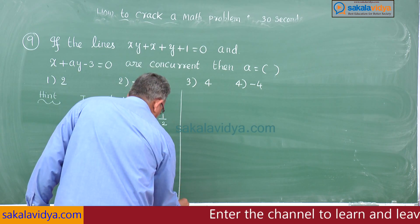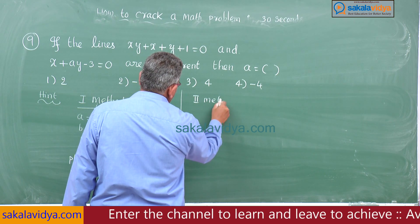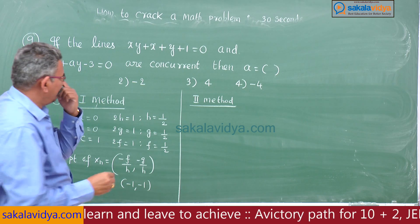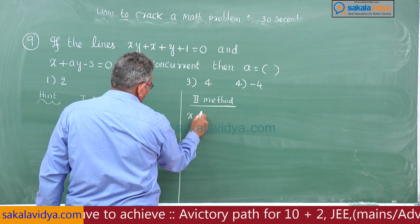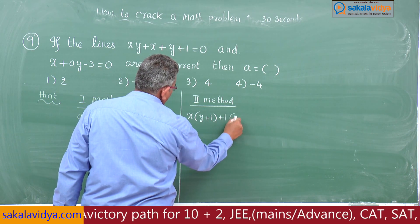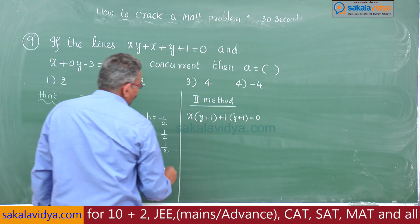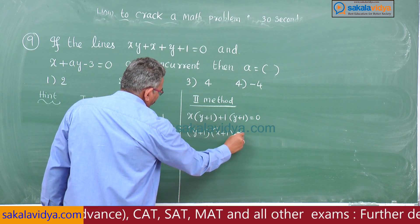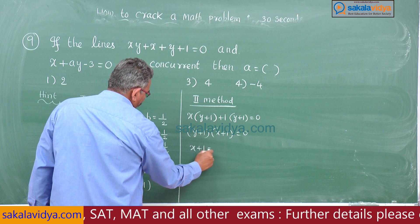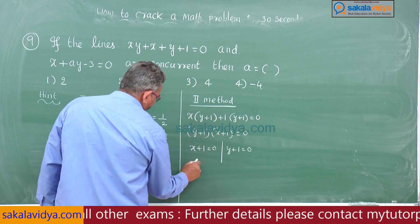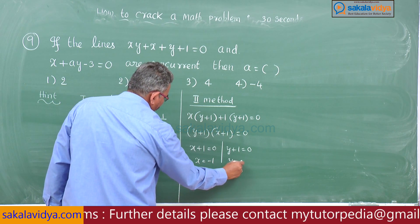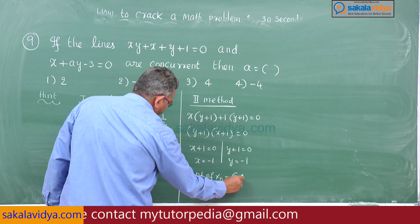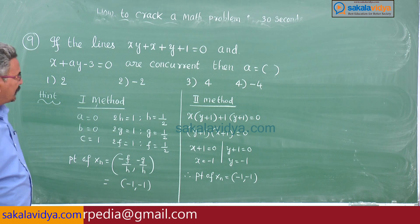Second method is factorization — finding the individual line equations from the pair. From xy + x + y + 1, take x common: x(y + 1) + 1(y + 1) = 0, giving (y + 1)(x + 1) = 0. So x + 1 = 0 and y + 1 = 0, meaning x = -1 and y = -1. Therefore the point of intersection is (-1, -1).